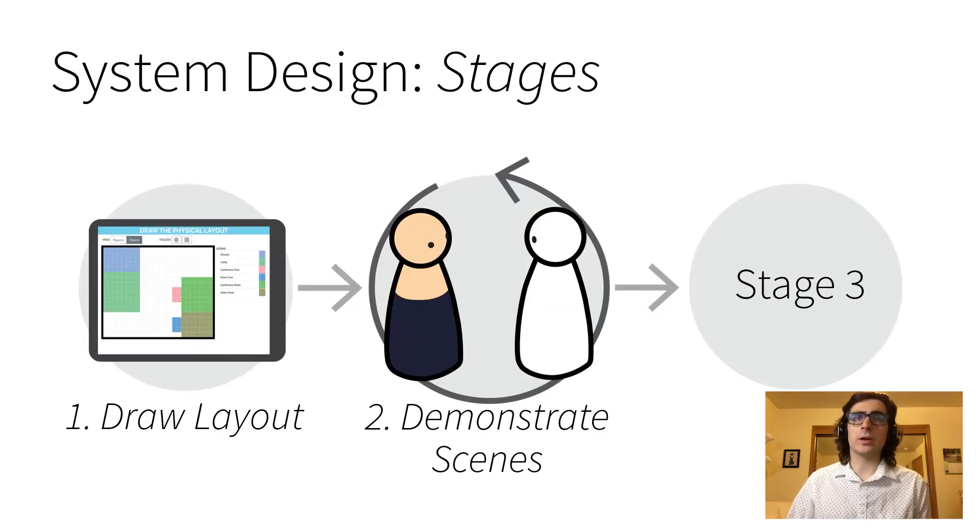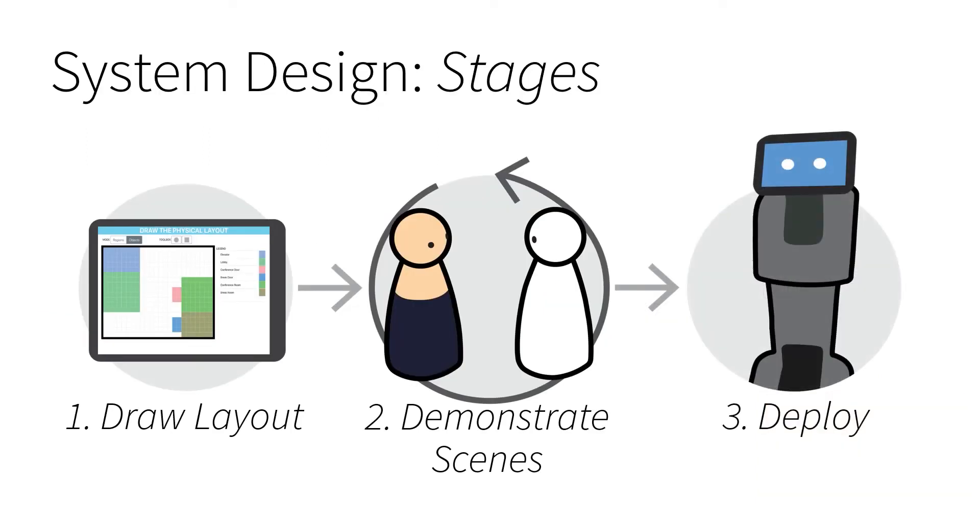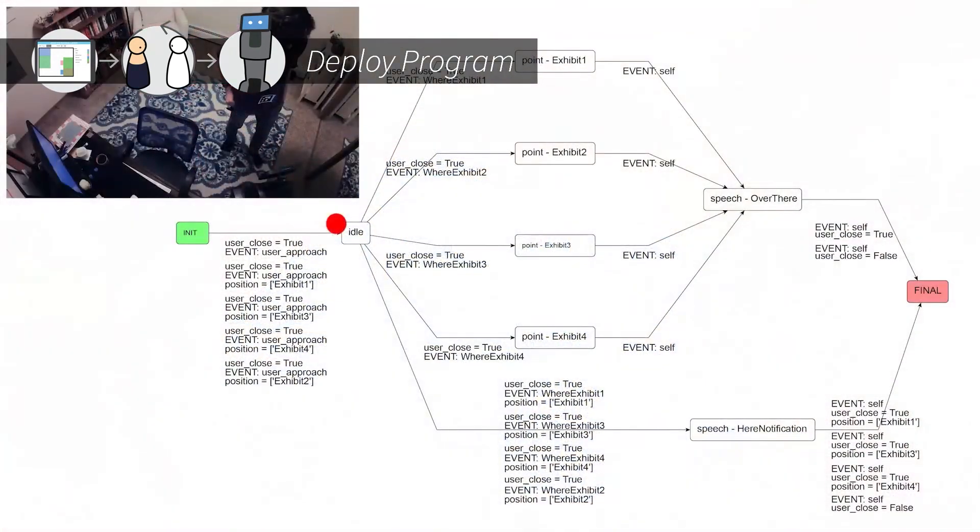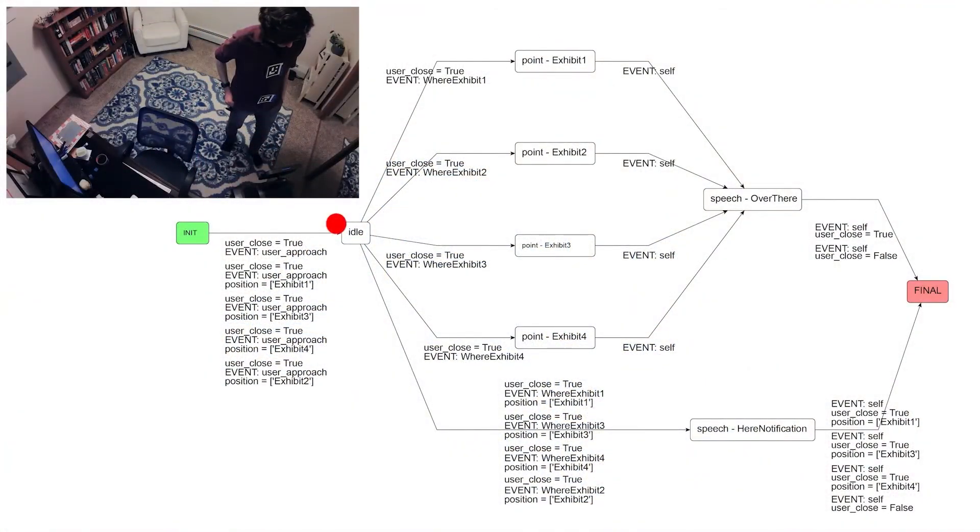The full program can then be deployed on a robot for execution. This is an example deployment in which a robot provides help to visitors to a museum. The red dot shows where the robot is in the execution of the program.